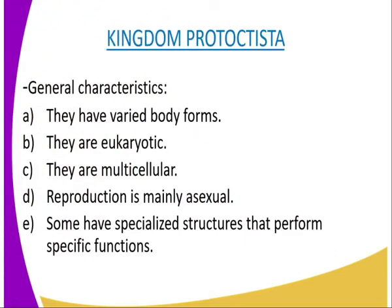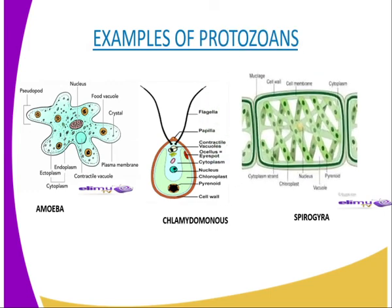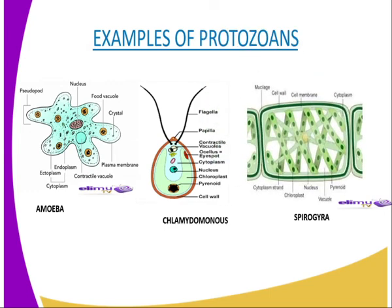The general characteristics of kingdom Protoctista: first, these organisms have varied body forms. Some are microscopic, unicellular or colonial, while others are multicellular. As you can see the amoeba, the chlymidomonas and the spirogyra, they are not of the same body shape — each one of them has a different body form. The second characteristic is that their nuclei are membrane bound and they are said to be eukaryotic.